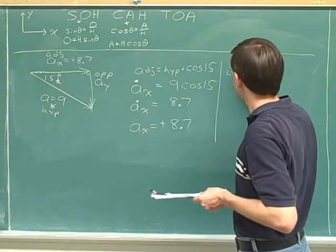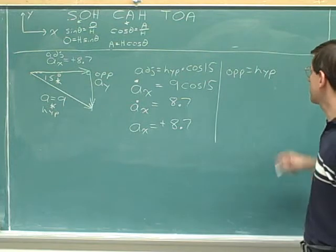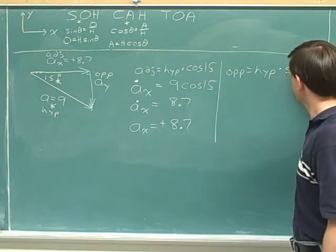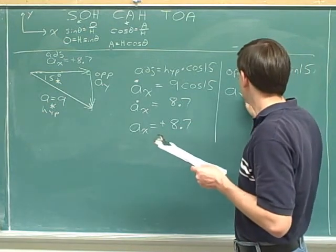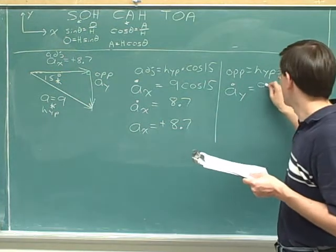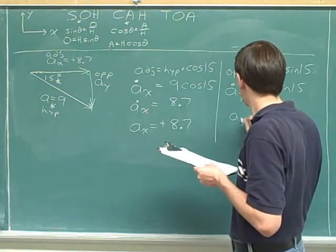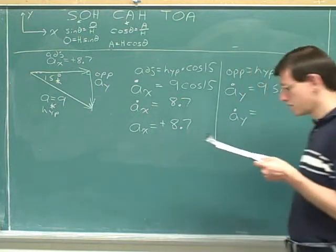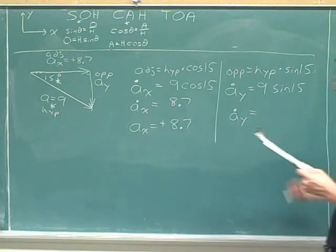Now we try to find the opposite side. We use the hypotenuse. And the sine tells you about the opposite side. Opposite sine is a sub y, but it's the magnitude of a sub y. The hypotenuse is 9 times sine 15.